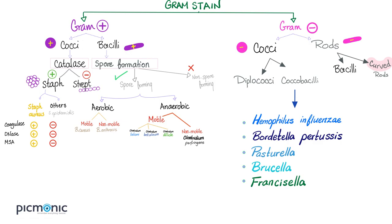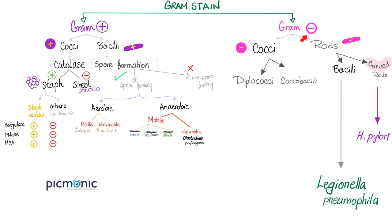Here's a hint: on your exam, if a bacteria name ends in '-ella,' the odds are it's more likely to be gram negative — so if you have to pick, pick gram negative. But there are exceptions; some bacteria ending in '-ella' are gram positive. Next, gram negative rods: the bacilli and the curved rods. Bacilli include Legionella, and the curved rod is H. pylori.